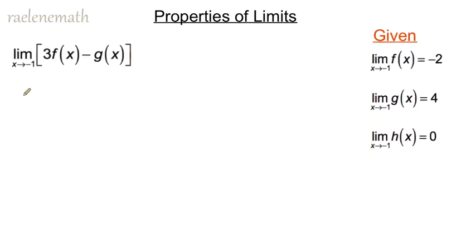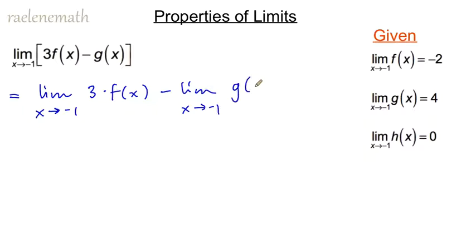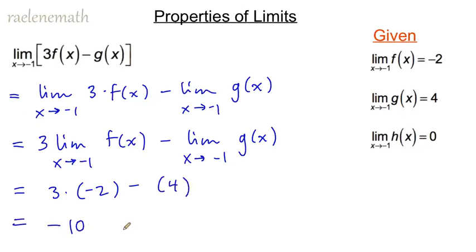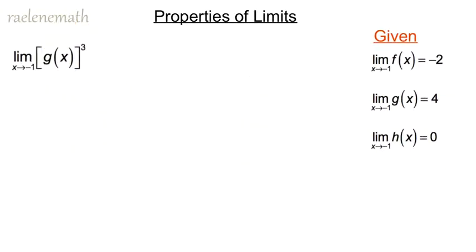For the first example, we apply the properties of limits by distributing the limit through the subtraction: the limit as x approaches negative 1 of 3f(x) minus the limit as x approaches negative 1 of g(x). We also pull the constant 3 in front of the limit. Substituting the given values, we get 3 times negative 2 minus 4, which equals negative 10. This new function is either continuous or almost continuous at x equals negative 1.